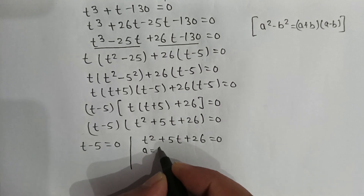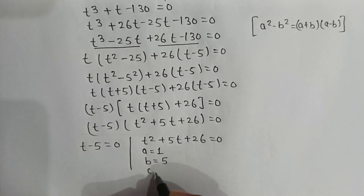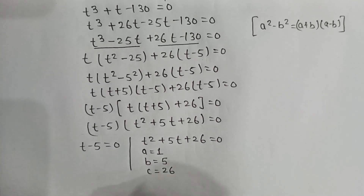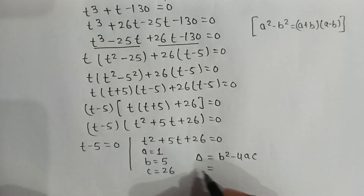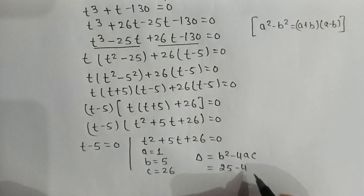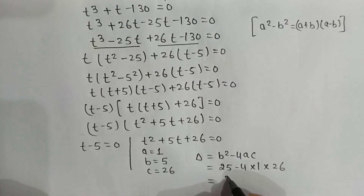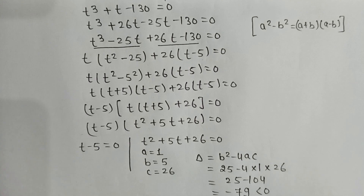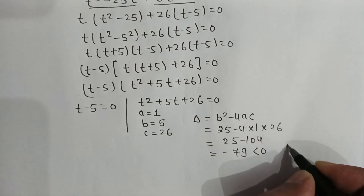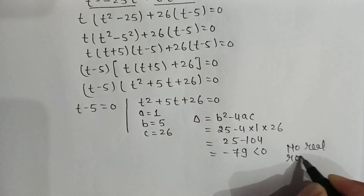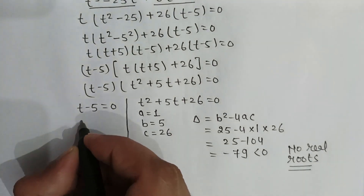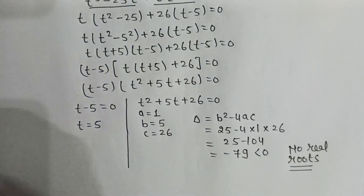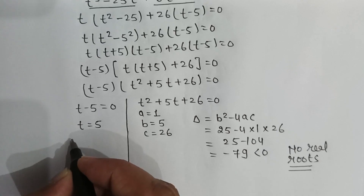For t squared plus 5t plus 26 equals 0, the values are a equals 1, b equals 5, c equals 26. The discriminant delta equals b squared minus 4ac, which is 25 minus 4 times 1 times 26, giving 25 minus 104, which equals negative 79, less than 0. So there are no real roots from the quadratic.